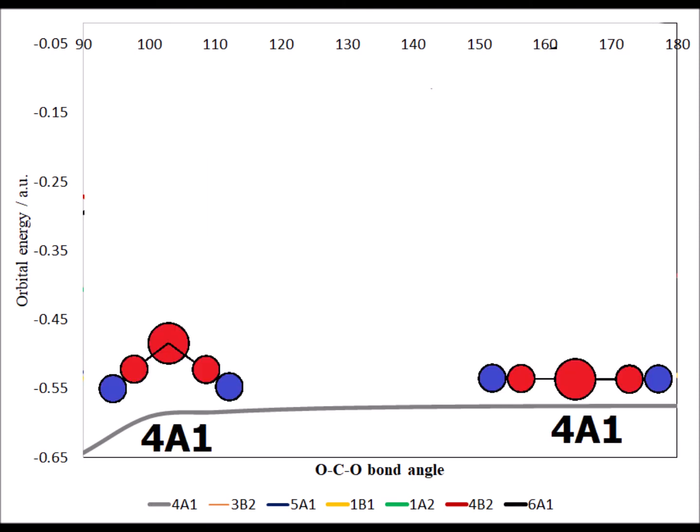The first orbital of interest is 4A1, with sigma bonding between the 2s on the central carbon atom and p orbitals on the oxygens. Except when the molecule is substantially bent, the orbital energy does not vary very much.